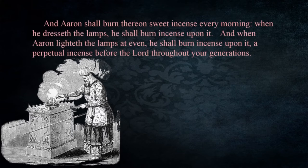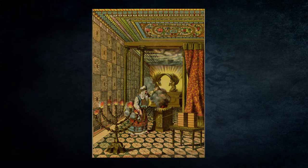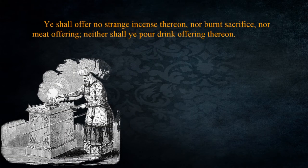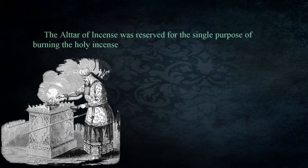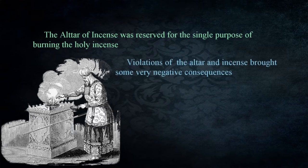'Aaron shall burn thereon sweet incense every morning when he dresseth the lamps; he shall burn incense upon it. And when Aaron lighteth the lamps at even, he shall burn incense upon it — a perpetual incense before the Lord throughout your generations' — Exodus 30:7-8. The incense and the altar were significant, not to be neglected, and this was a perpetual practice to be respected. There were also restrictions and prohibitions: 'Ye shall offer no strange incense thereon, nor burnt sacrifice, nor meat offering; neither shall ye pour drink offering thereon' — Exodus 30:9. The altar of incense was reserved for the single purpose of burning the holy incense.